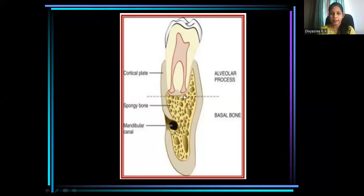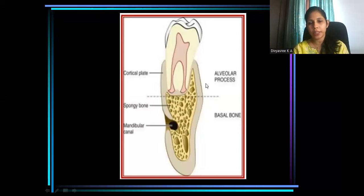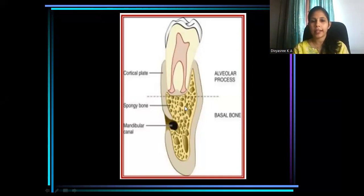Look at this diagram. Here you can see the alveolar process holding and supporting a tooth and the basal bone. Within the alveolar process, what we have is cortical bone as well as spongy bone. We have cortical plates, both outer as well as inner cortical plates. The spongy bone or cancellous bone occupies the space between the cortical plates.